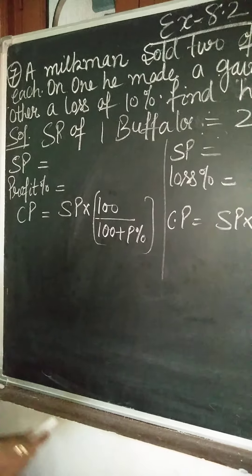A milkman sold two of his buffalos for Rs. 20,000 each. That means total selling price is Rs. 40,000.